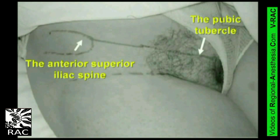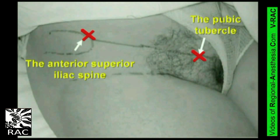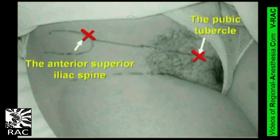The only consistent superficial reference points to identify the femoral nerve position are two bony prominences: the anterior superior iliac spine and the pubic tubercle. They mark the anchor points for the inguinal ligament. The femoral nerve has a remarkably consistent position relative to those two bony reference points, which are not subject to variation between individuals. Mark on the skin the anterior superior iliac spine, pubic tubercle, and the inguinal ligament between them.